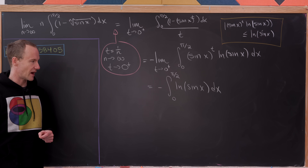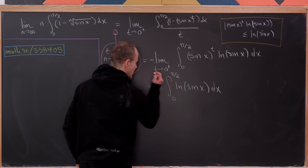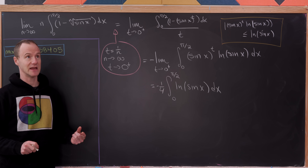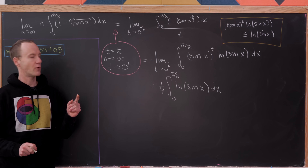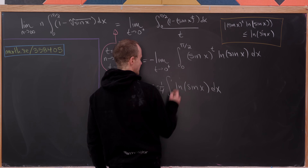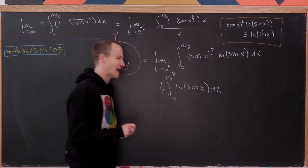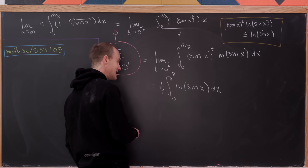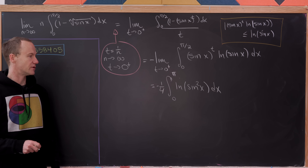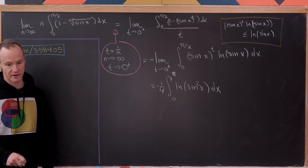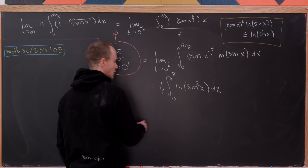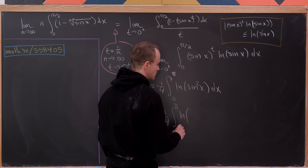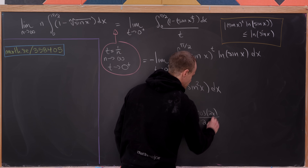I'm going to start by multiplying this integral by 4/4 — the number 1. I'll use the fact that sine is symmetric about the point π/2 to extend the integral from 0 to π/2 up to an integral from 0 to π. That accounts for half the factor of 4. The remaining factor of 2 goes inside the natural log as a square. Then I apply a power-reducing formula on that sine squared, leaving minus 1/4 times the integral from 0 to π of ln((1 minus cos(2x))/2) dx.